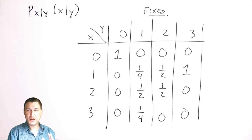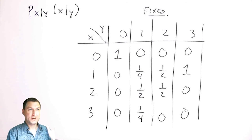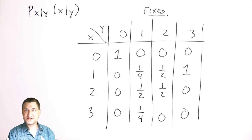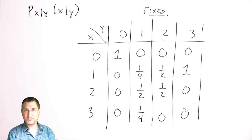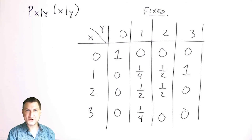In the discrete world it's not too hard to do this. In the next two lessons I'll talk about what happens when Y is continuous and X is discrete, and then when they're both continuous.